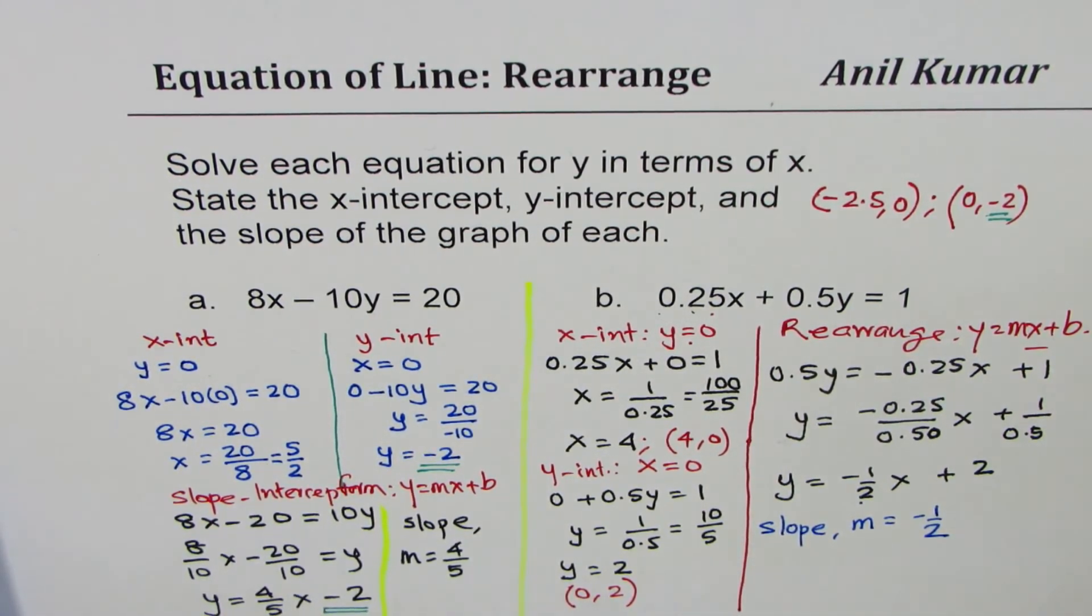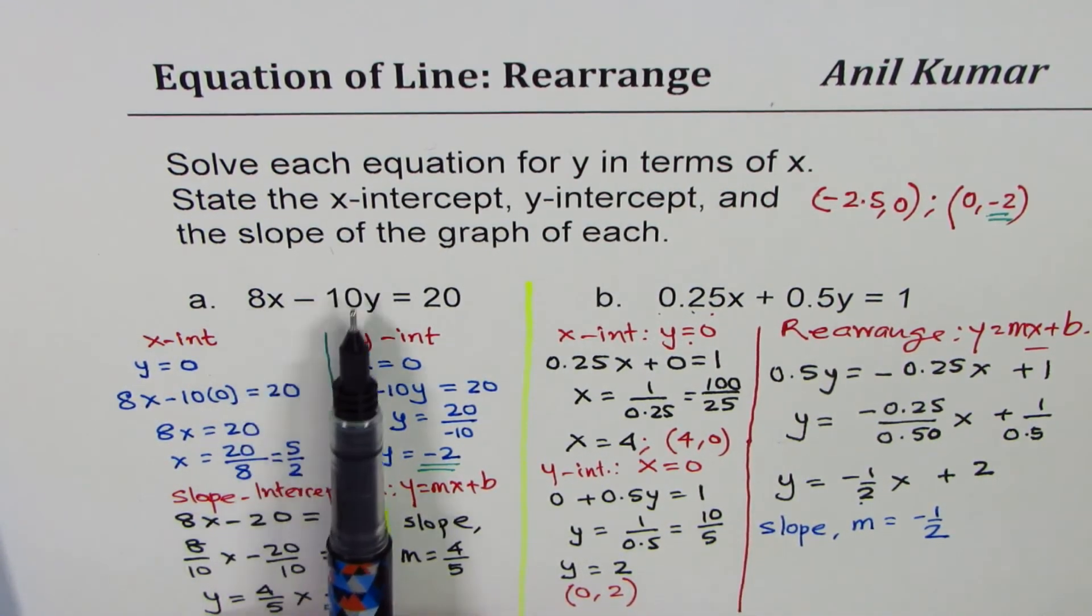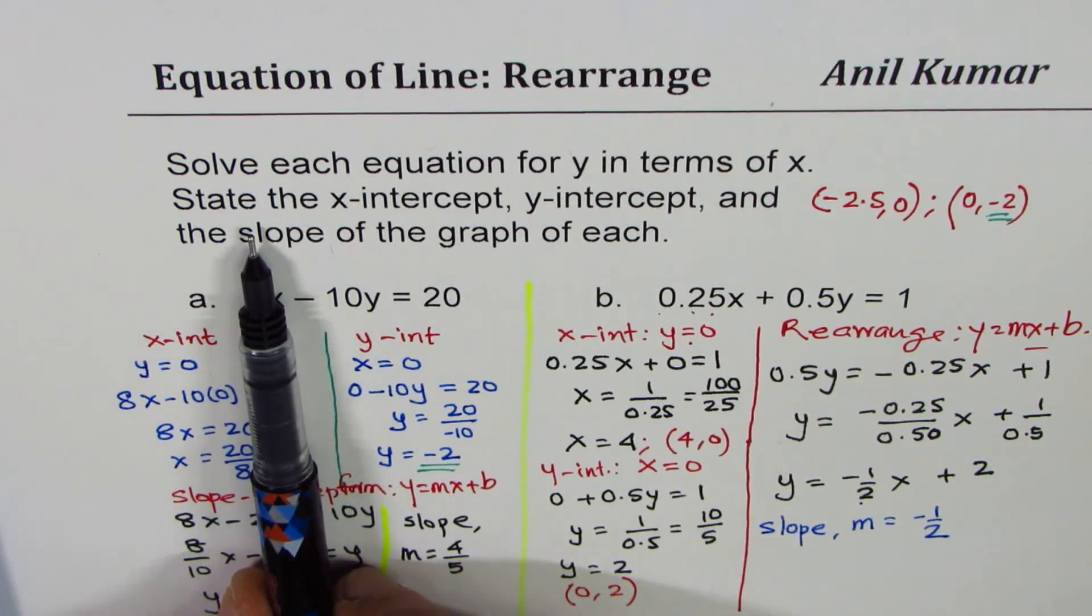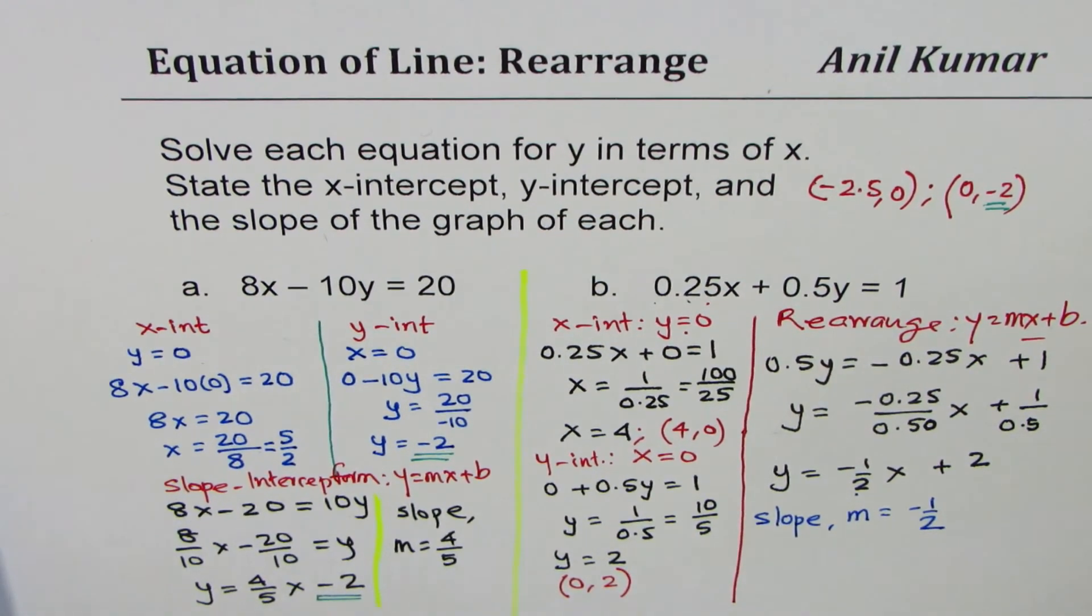So I hope with this you understand how we can find x and y intercepts and slope from the given linear equation. Remember, for x-intercept, we have to equate y equals 0, then divide by the coefficient of x. For y-intercept, set x equals 0, divide by the coefficient of y. For slope, rearrange in y equals mx plus b. m is the slope. I hope that helps. Thanks for watching. Please share your comments and suggestions. Thank you, and all the best.